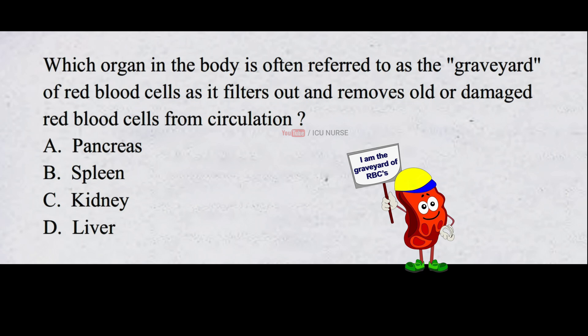Which organ in the body is often referred to as the graveyard of red blood cells, as it filters out and removes old or damaged red blood cells from circulation? A. Pancreas B. Spleen C. Kidney D. Liver.